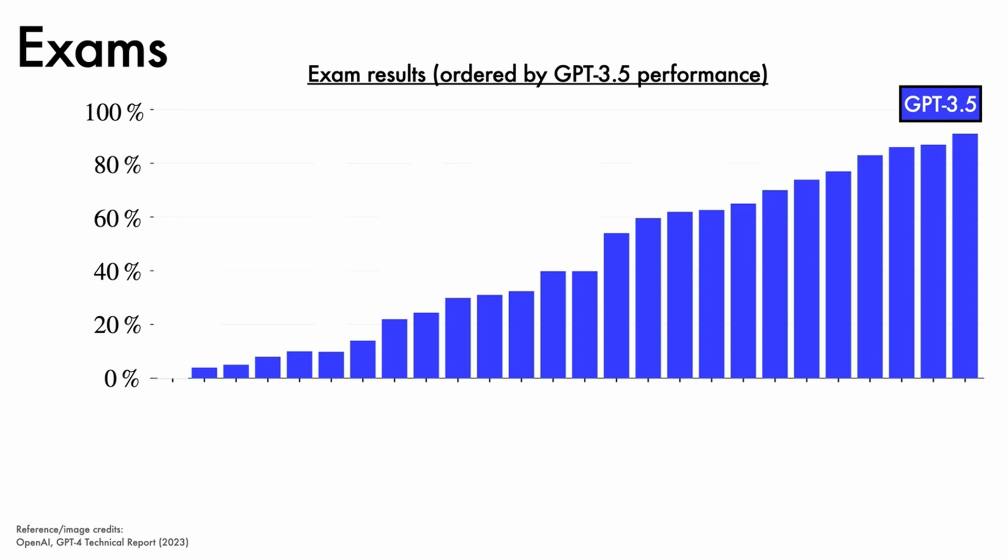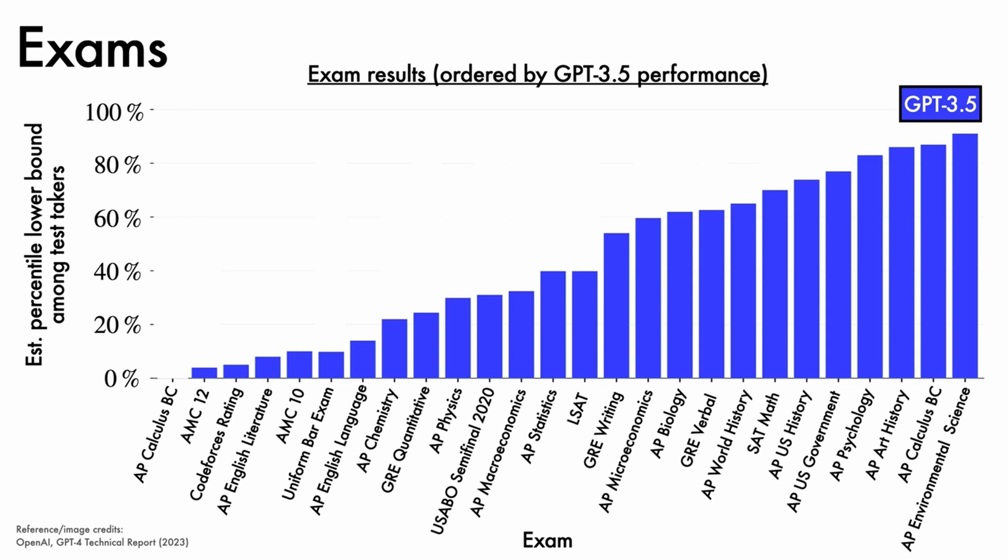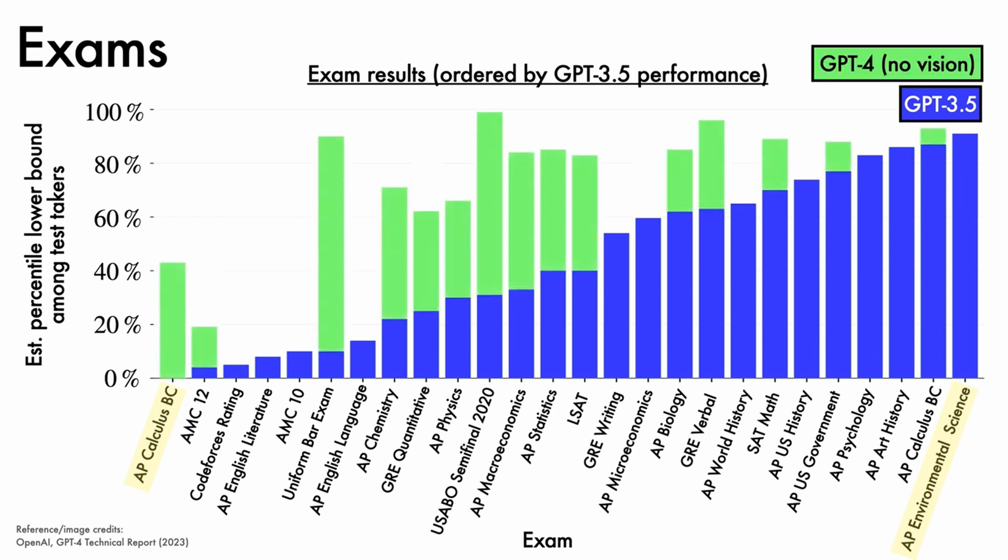Here are the GPT 3.5 exam results ordered in increasing performance on the y-axis. We have the estimated percentile lower bound among test-takers on the x-axis. We have the exam taken. GPT 3.5 was not able to make much progress on exams like AP Calculus BC, up to those such as AP Environmental Science, where GPT 3.5 is already among the top percentiles of test-takers. In light green, we can see how GPT 4 language-only model improves these results, while in dark green we see places where GPT 4 multimodal vision and language does better still.